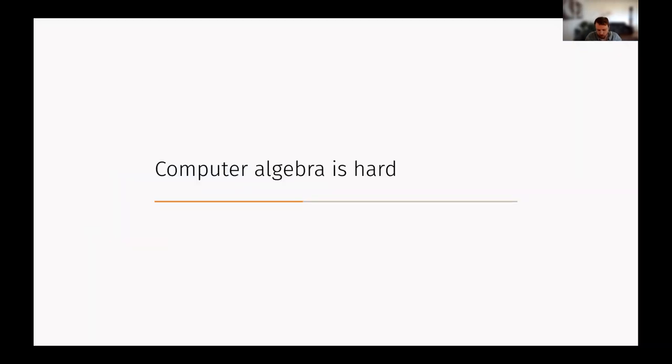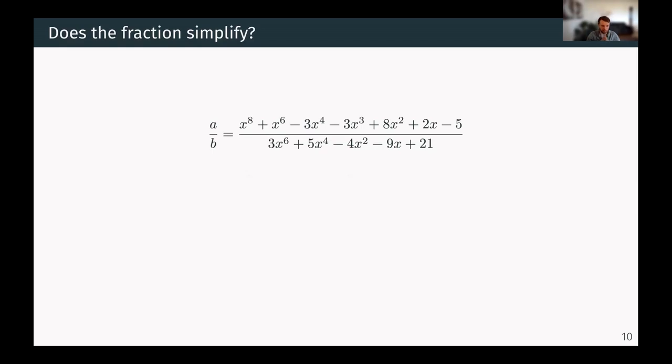So I just want to sketch in one slide why computer algebra is hard. I think most of you have experience with working with floats, but once you start transitioning away from that, things get hard in probably unexpected ways. For example, let's have a look at this ratio, A over B. And my question is,